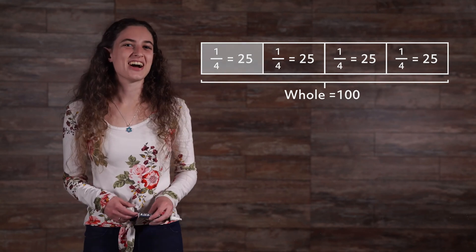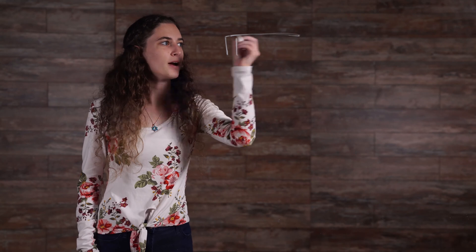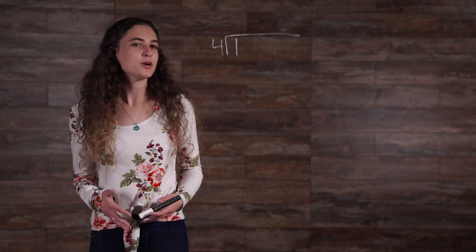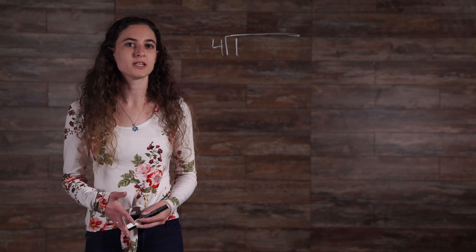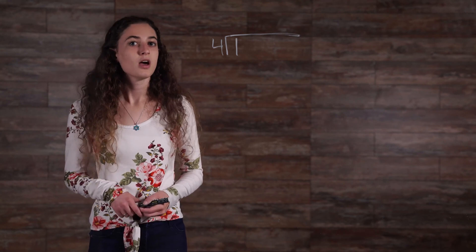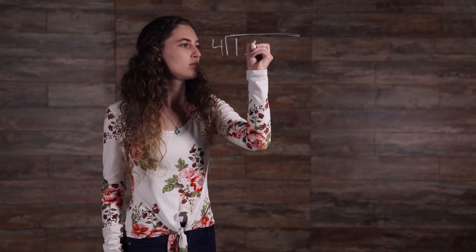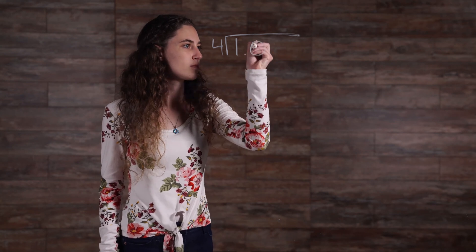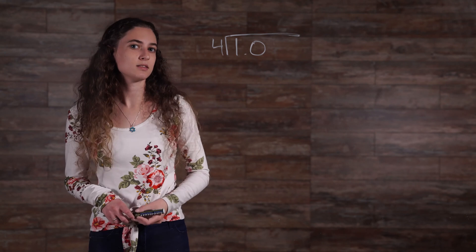Now let's figure out how to convert this into a decimal. We're going to take our fraction 1 fourth, which is the same as saying 1 divided by 4. Dividing this way doesn't look like it will work, but using our knowledge of place value, we can make it work. First, rewrite the 1 as 1.0. Instead of 1, the dividend is now 10 tenths.